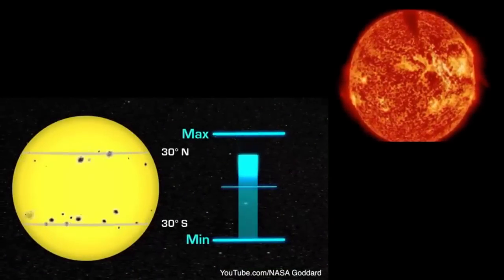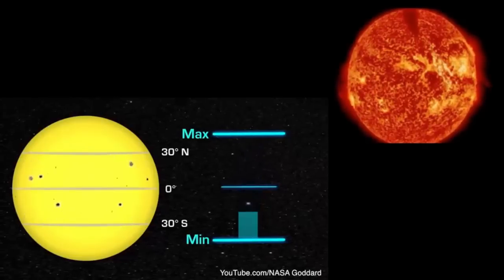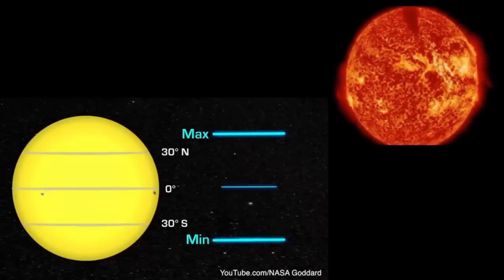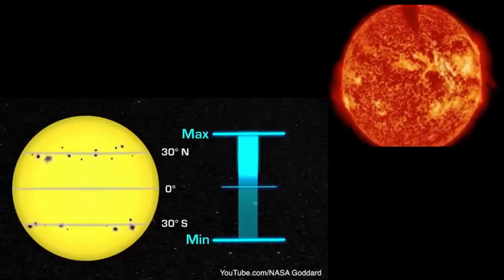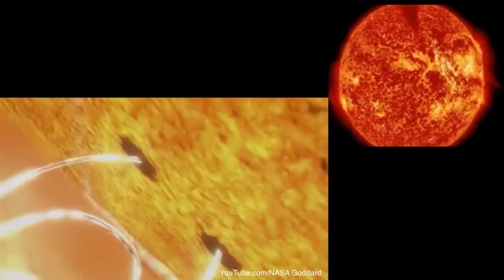At solar minimum there are sometimes no sunspots to observe. At solar maximum there can be many at the same time. The number of sunspots is important because sunspots are the visual markers of where powerful magnetic fields have emerged from the Sun's interior.